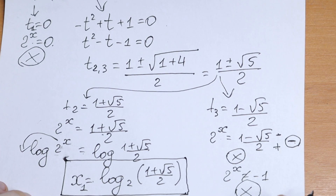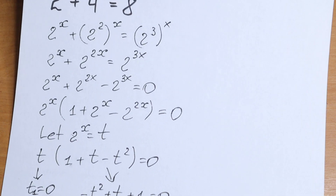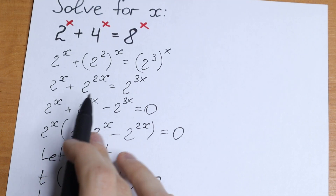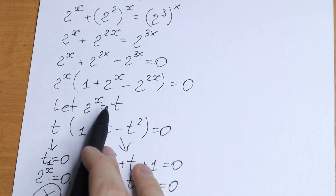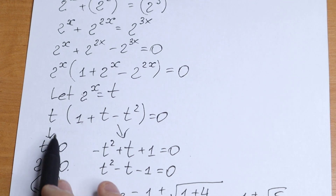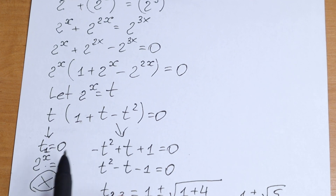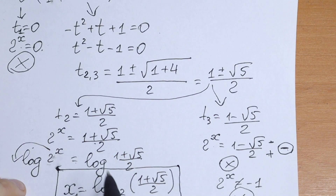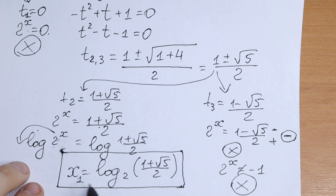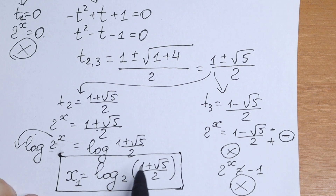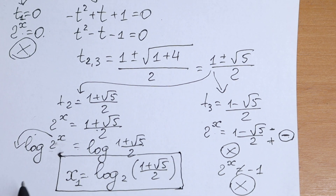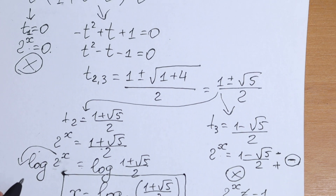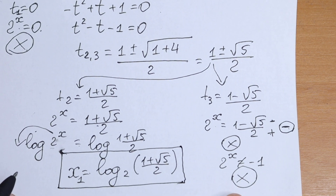And this is our complete solution to this equation. Just a few steps: simplifying, factoring out 2 to the power x, and we had 3 cases — ultimately giving us the one answer x equals log base 2 of (1 plus square root of 5) over 2. If you still have any questions, write your question in a comment, write your suggestion in a comment. Thank you so much for watching, subscribing, and see you in the next videos.